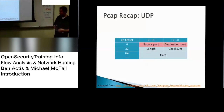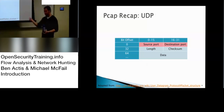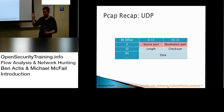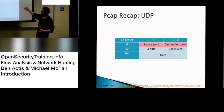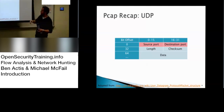UDP is more like throwing a bunch of glitter at something — it doesn't matter if it all gets there or not, you just send a bunch of it. Note that UDP doesn't have any flags; it just has a source port and a destination port.